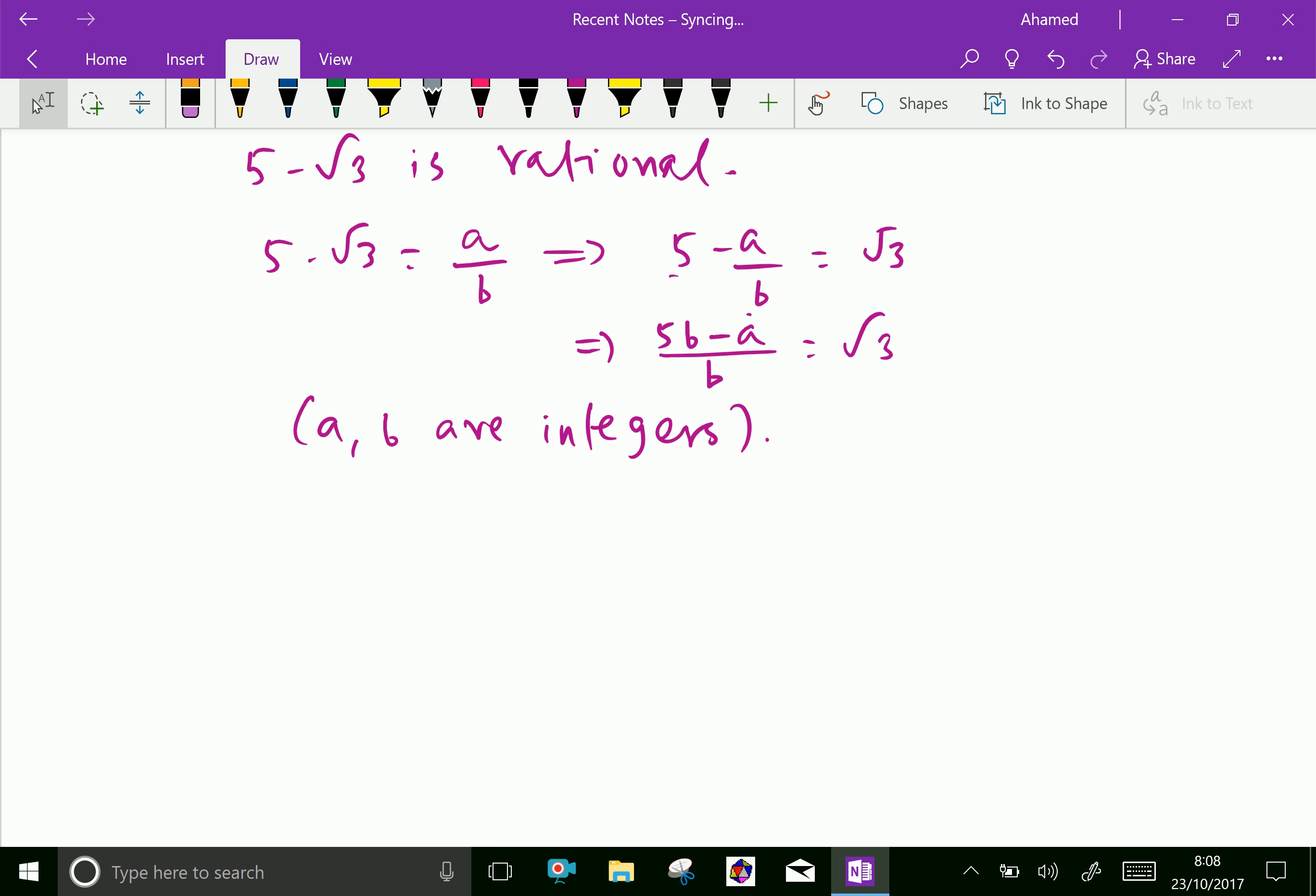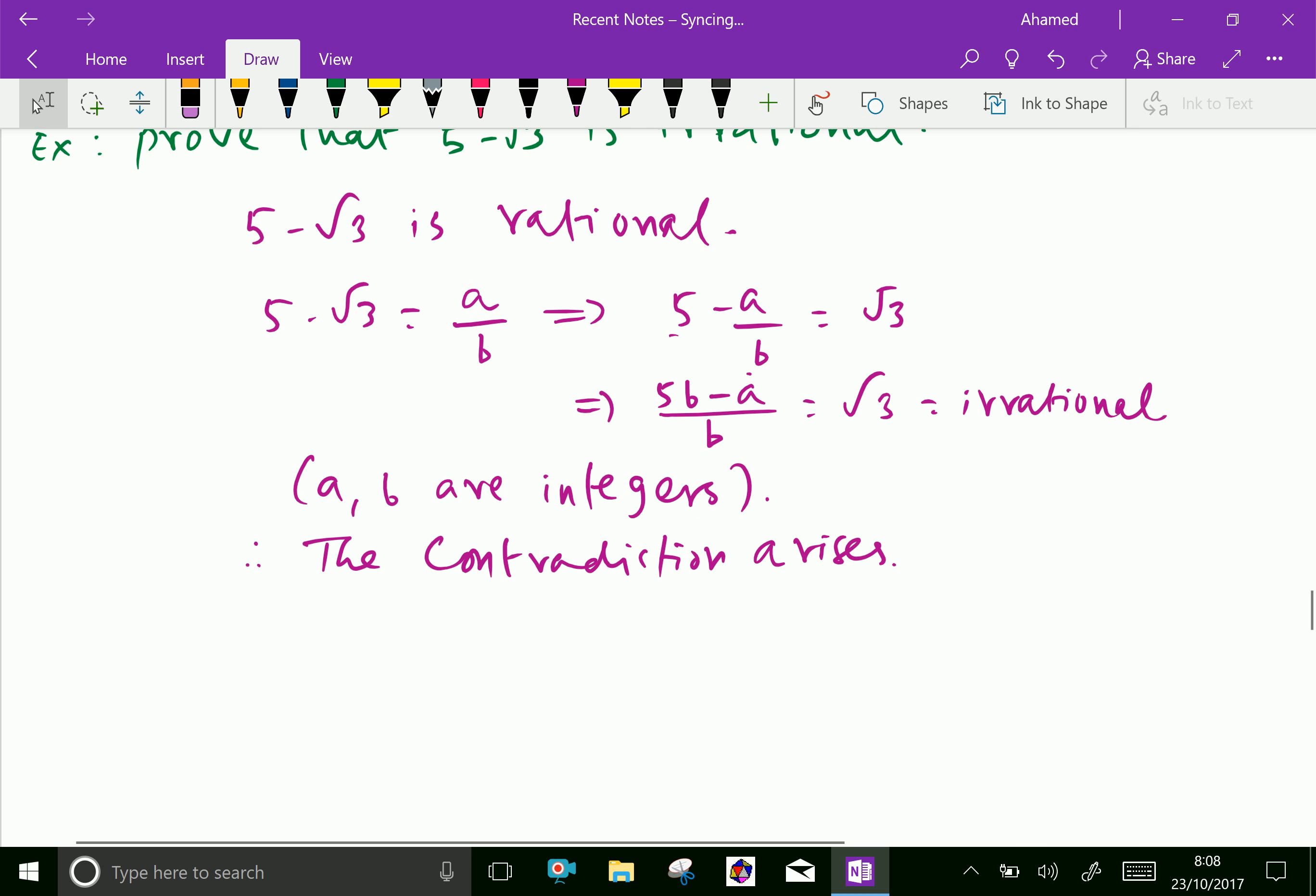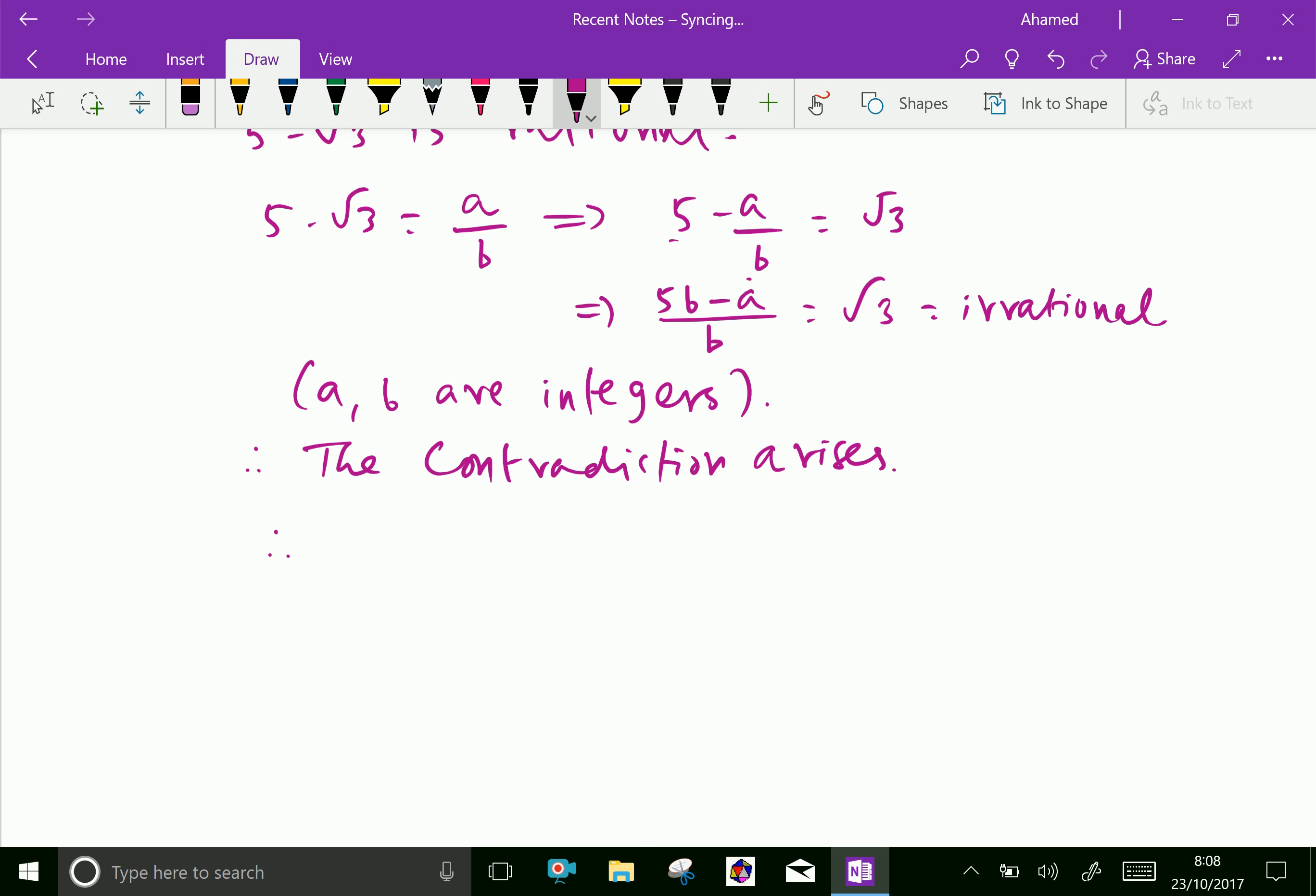But √3 is irrational. Therefore, contradiction arises. We already let 5 - √3 be rational, but that is wrong. Because of the contradiction, we conclude 5 - √3 is irrational.